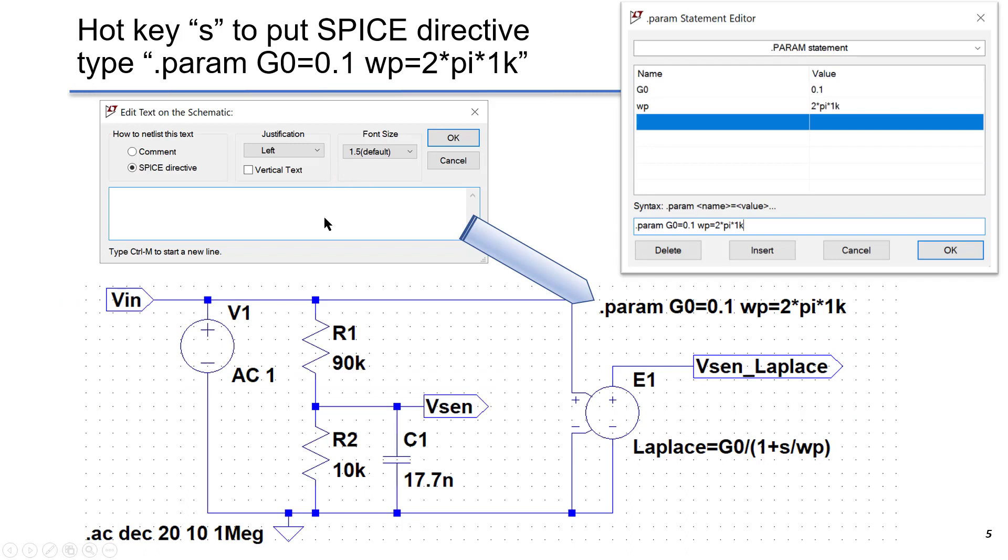How to set up the parameters? We can use hotkey S to put the spice directive here. And we type dot PARAM as the parameter G0 equals to 0.1, WP equals to 2 times pi times 1k. By doing so, we can define the parameters here. These parameters can be further used in the Laplace transform to make the whole setup easy to read.